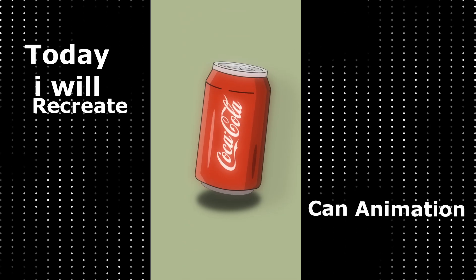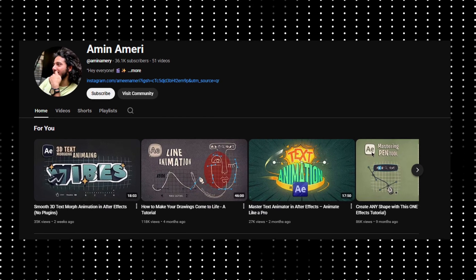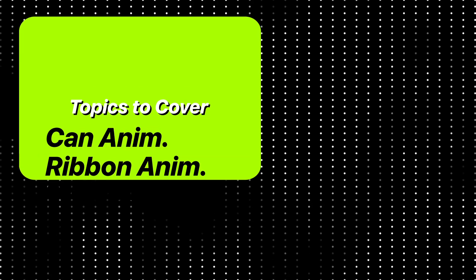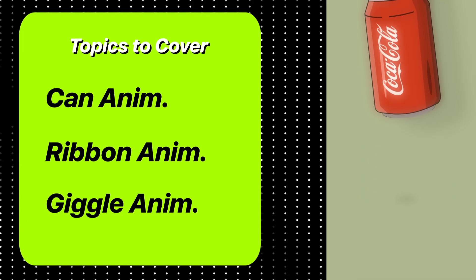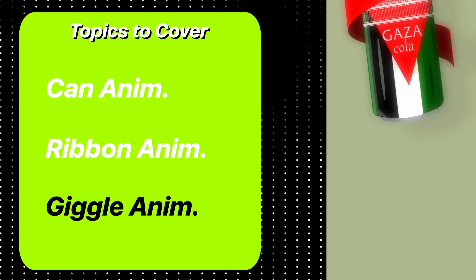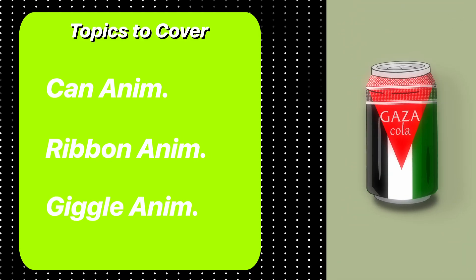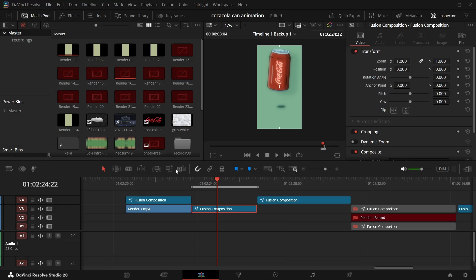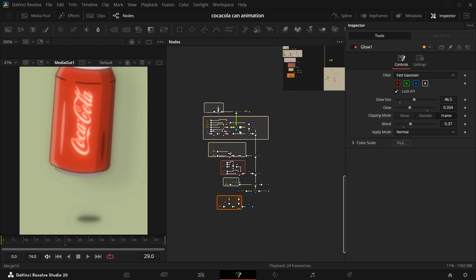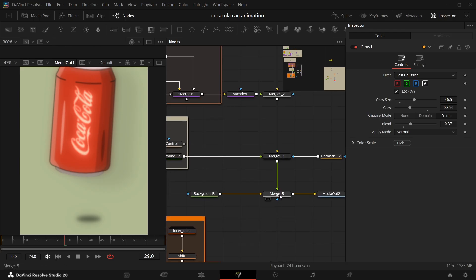Hello, good people! Today I will recreate this can animation which was done by an After Effects creator, and I will try to make this in Resolve. The topics I will cover are the can animation, ribbon animation, and jiggle animation. Let's get started. I'll be sharing the whole Fusion file with you guys.